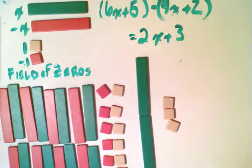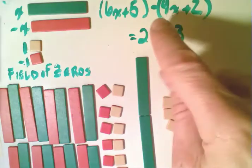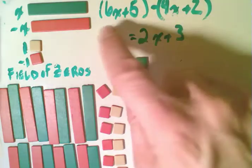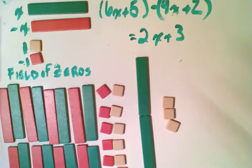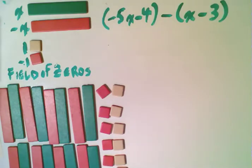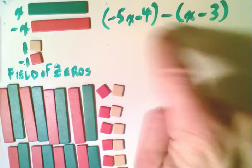So we have essentially done the subtraction literally, taking these things away from these things. And it's pretty straightforward when you have enough tiles. Let's see what happens when you don't have enough tiles. So a little bit more difficult of a question here. Lots of negatives floating around here.